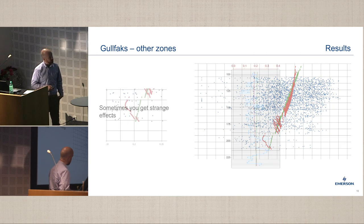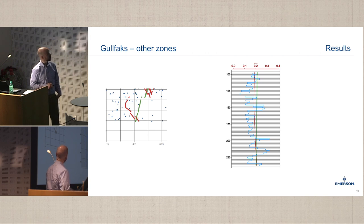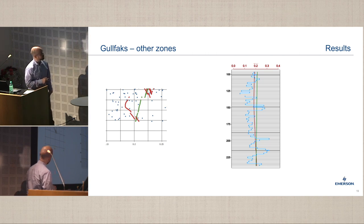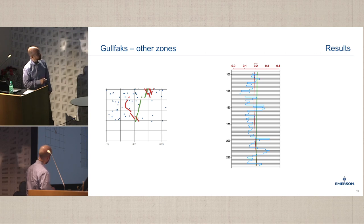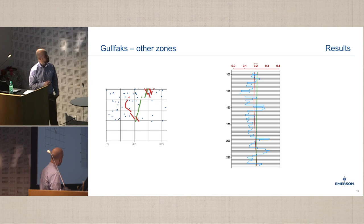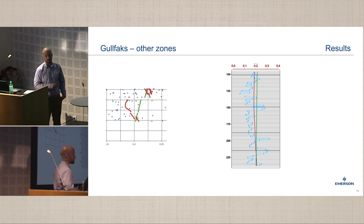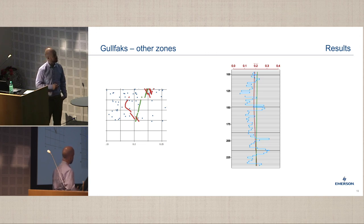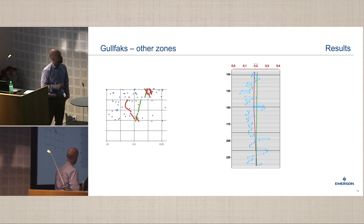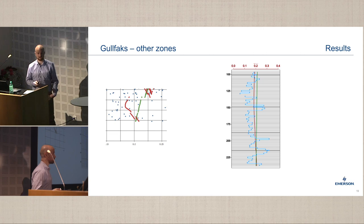Looking at that area in detail: linear regression in green and machine learning in red. Looking at the detail on the well, we don't see much overfitting — it's actually following the trends better than linear regression. So we're ruling out overfitting here.